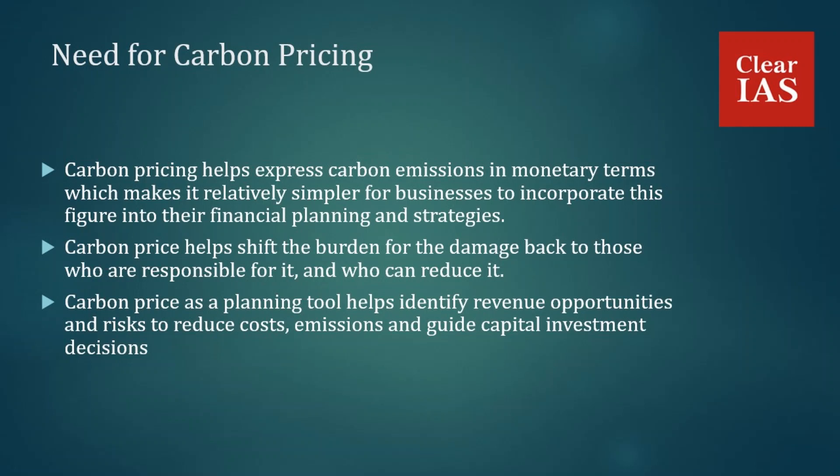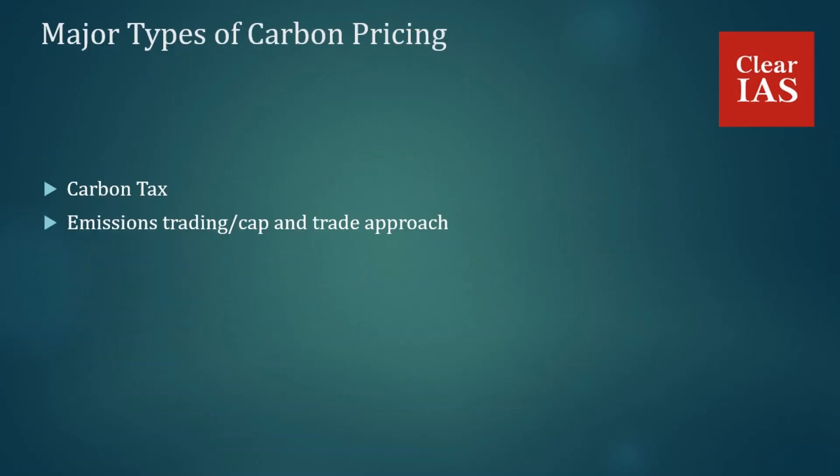There are basically two broad ways to establish a carbon price. The first is a carbon tax, which is levied by the regulator or government on activities and products that entail a carbon cost. For example, the government could levy a carbon tax on the distribution, sale, or use of fossil fuels. This drives up the cost of these fuels and associated activities, encouraging businesses to switch to greener options.